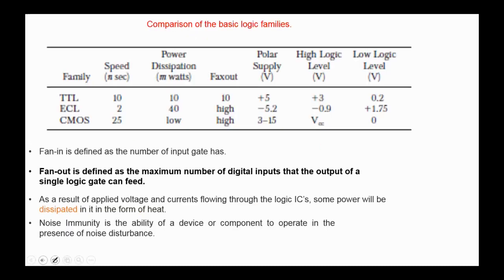This is a comparison table of the basic logic families. For example, the high logic level in TTL is +3 volts and the low logic level is 0.2 volts. The fan-out is 10 and the speed is 10 nanoseconds.